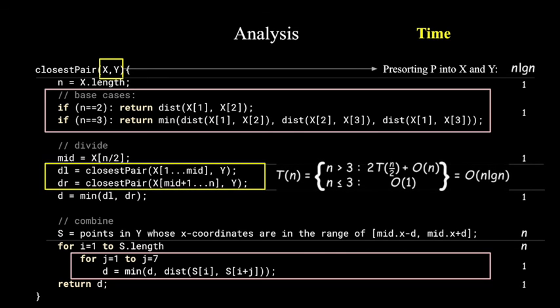The divide and conquer method divides every problem into two sub-problems. So the total running time of the recursive function is n log n. Adding this with the time for pre-sorting arrays, which is also n log n, we get a total running time of n log n.